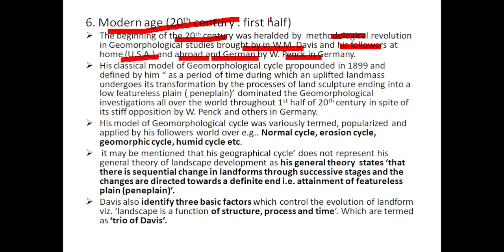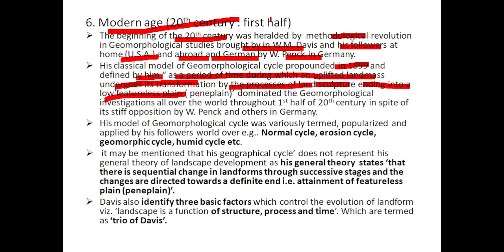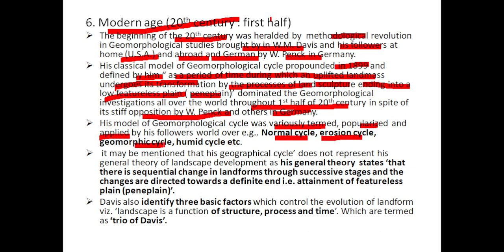Davis's classical model of the geomorphological cycle was propounded in 1899 and defined by him as a period of time during which an uplifted land mass undergoes its transformation by processes of denudation, ending into a low featureless plain — which he termed the peneplain. This model dominated throughout the first half of the 20th century in spite of stiff opposition by W. Penck and others in Germany. His model of the general cycle was variously termed, popularized, and applied by his followers, for example: normal cycle, erosion cycle, geomorphic cycle, and humid cycle.